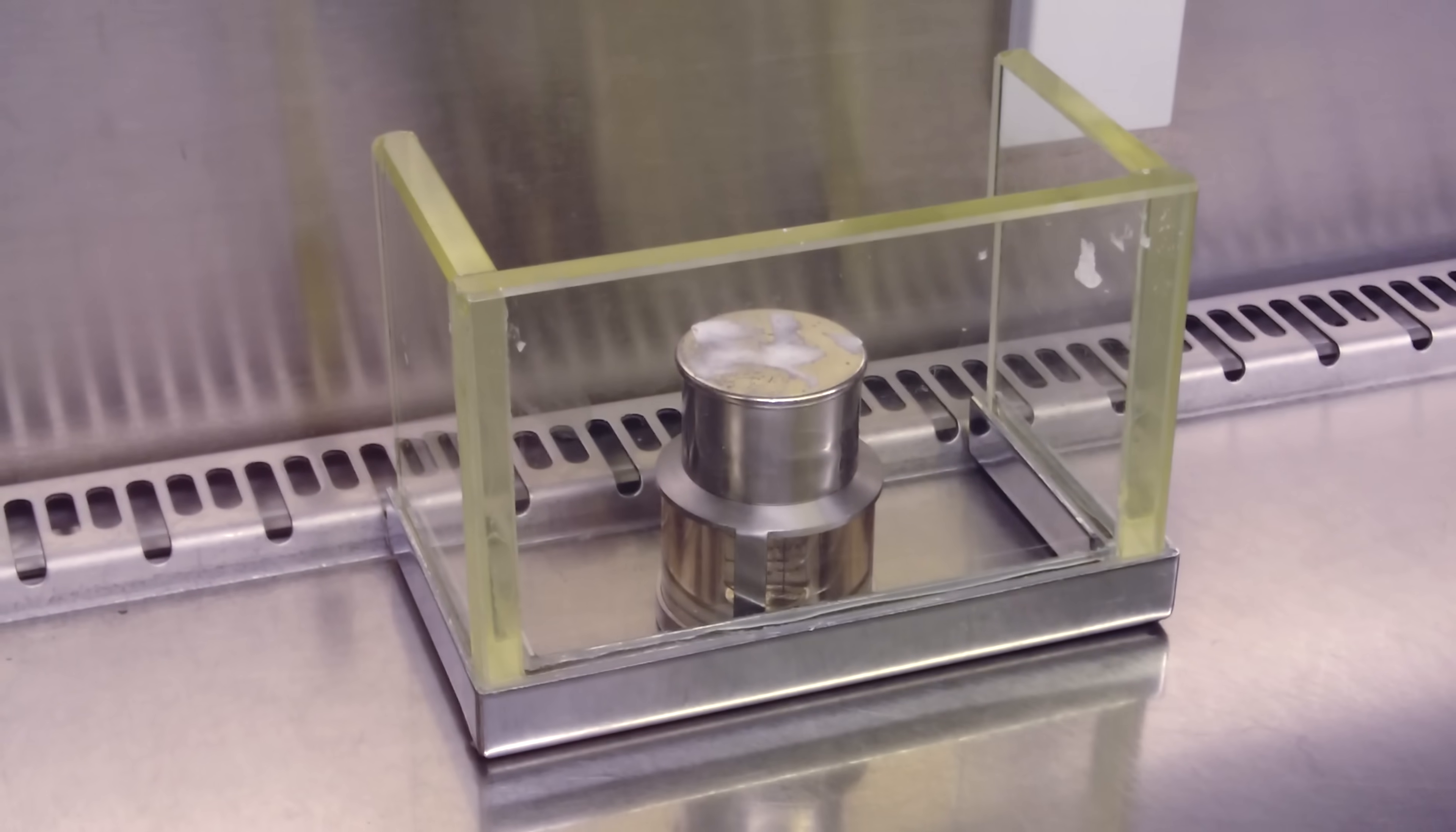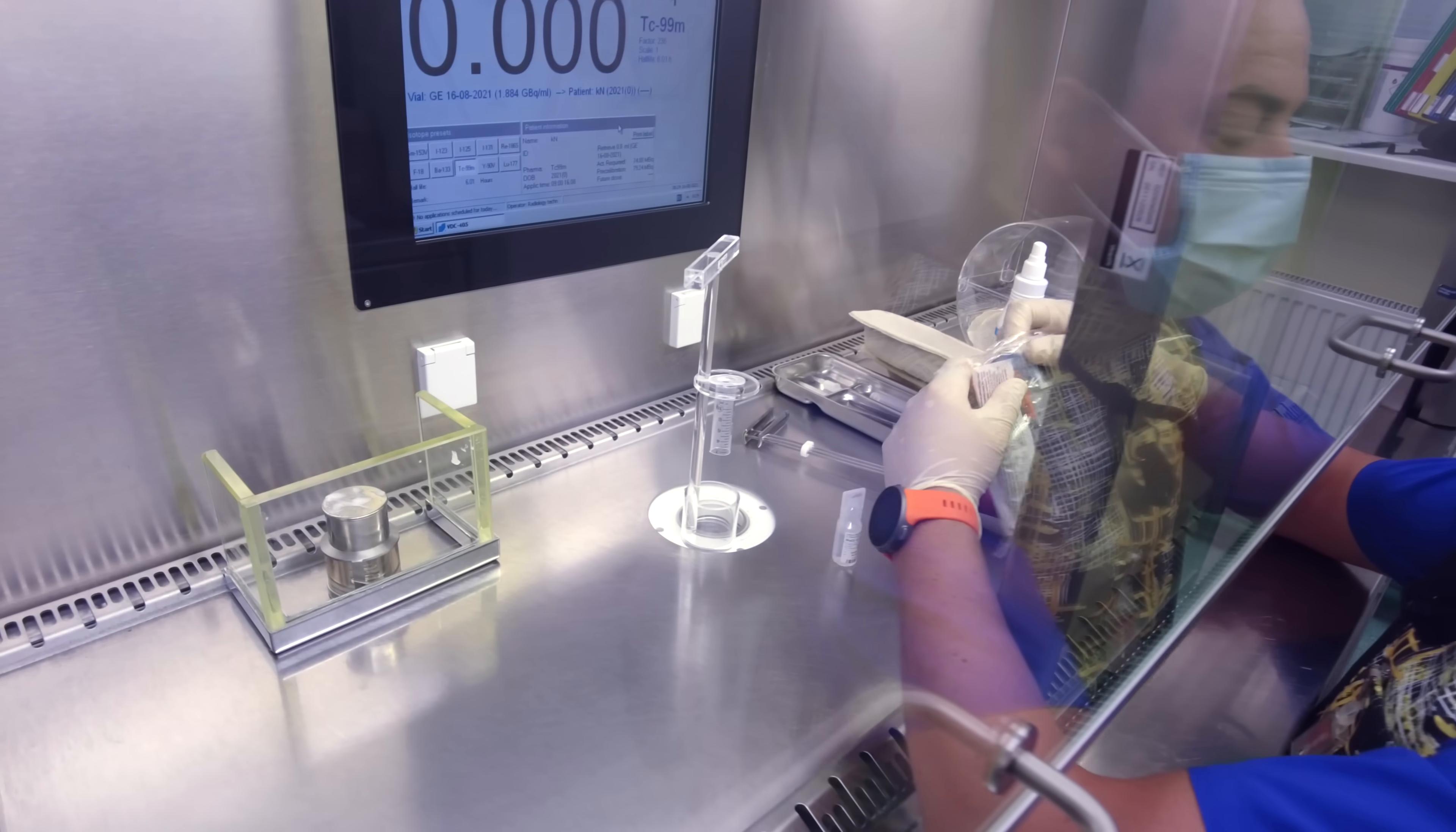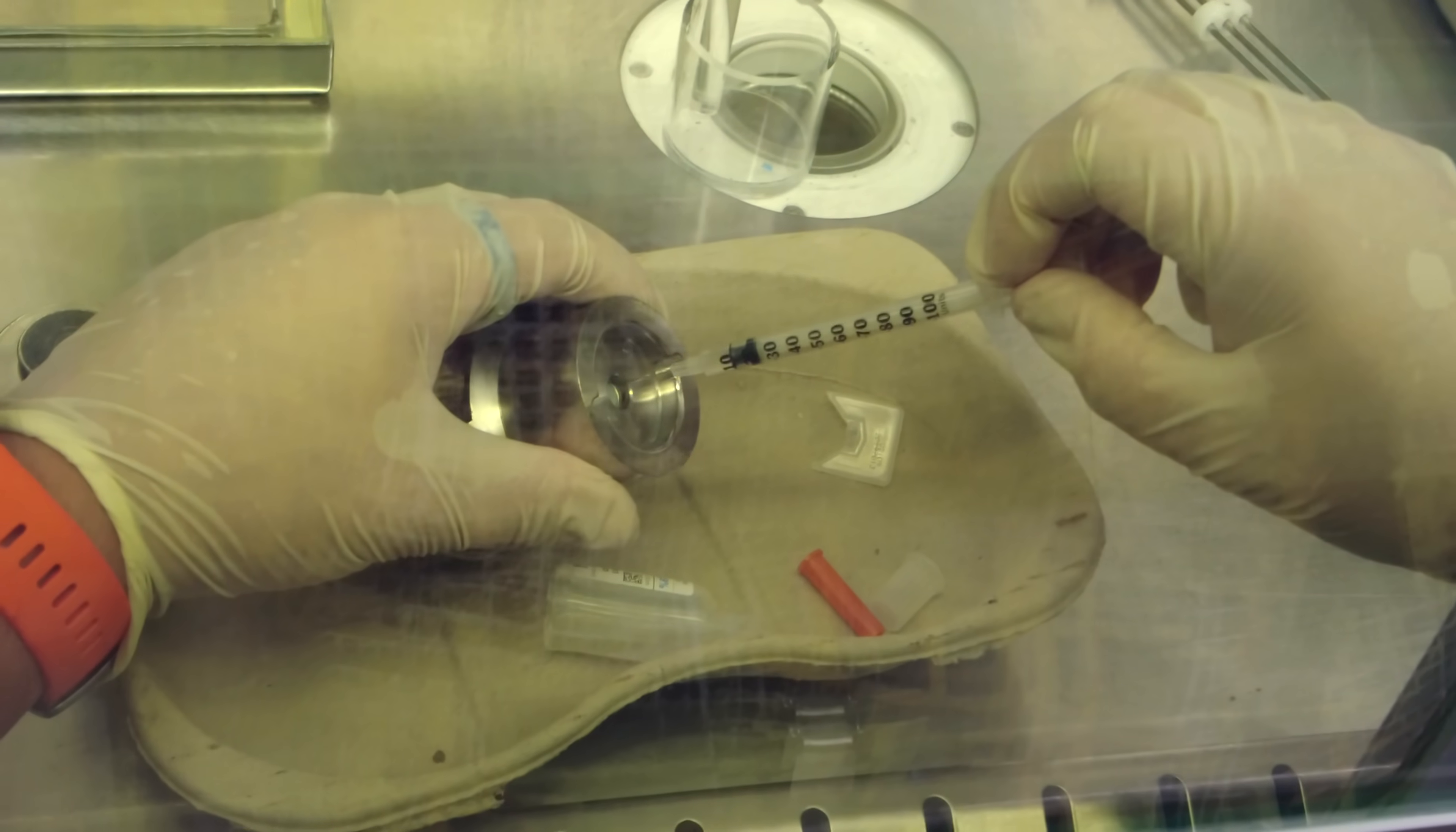Even the jar with technetium looks quite unusual. It's made of lead glass and tungsten for maximum protection. After obtaining medicinal technetium, it gets diluted in a medicine before being given to patients. In our case, it will be used for running a thyroid medical test. That is why technetium needs to be diluted in regular saline.